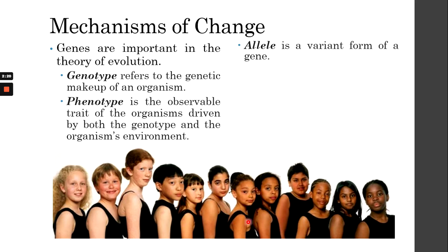Let's look at an example: a sample of children with various degrees of skin color. Genotype is the gene passed on from their parents and grandparents. Phenotype is the observable trait — some kids have lighter skin color while others have darker skin color. That is the expression of the genes they have. Allele is the variant of the gene; for example, everyone has a gene for skin color, but everyone has a different allele of that gene, resulting in variety in skin color.